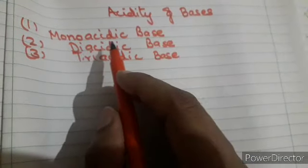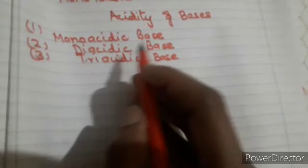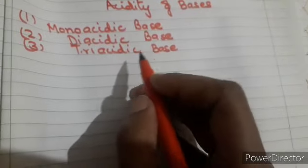The next head is acidity of bases and in this we consist of three things: monoacidic base, diacidic base, and triacidic base. We will see how a base shows this type of characteristics.